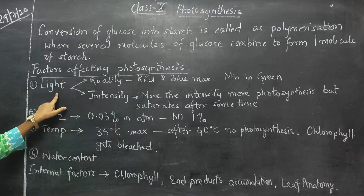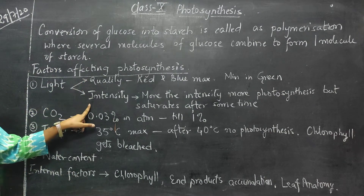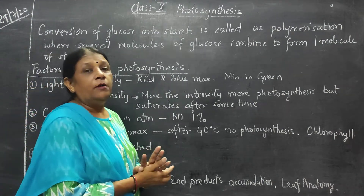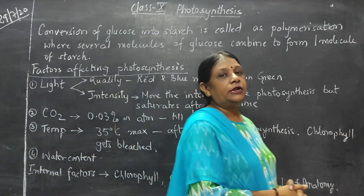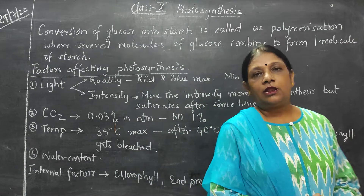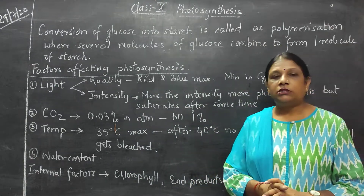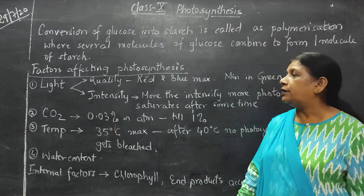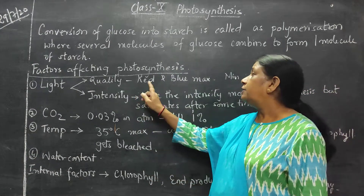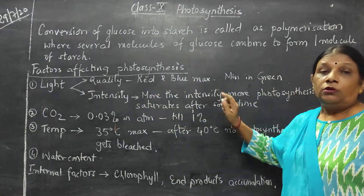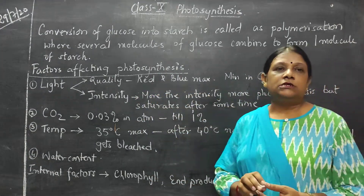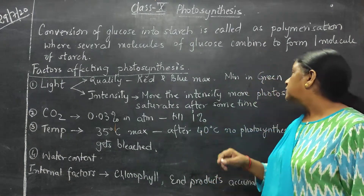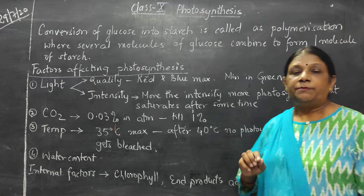Under light, it comes to quality and intensity. What is quality? As you know, white light is made up of seven colors — all the seven colors of the rainbow make up white light. Out of that white light, photosynthesis is maximum in red and blue light, whereas minimum in green light.